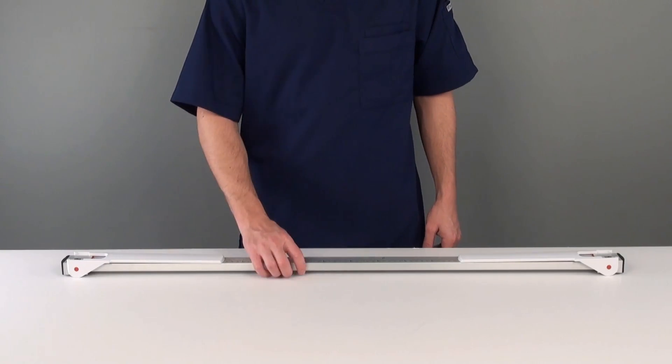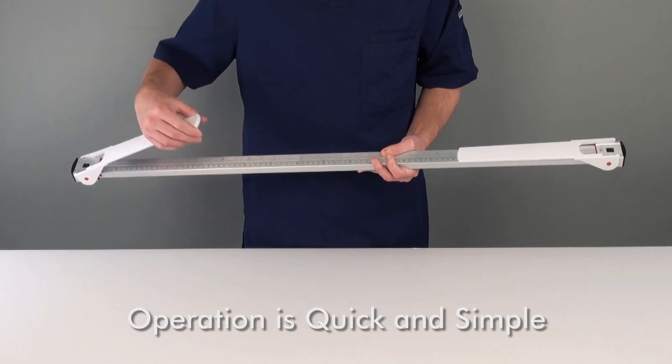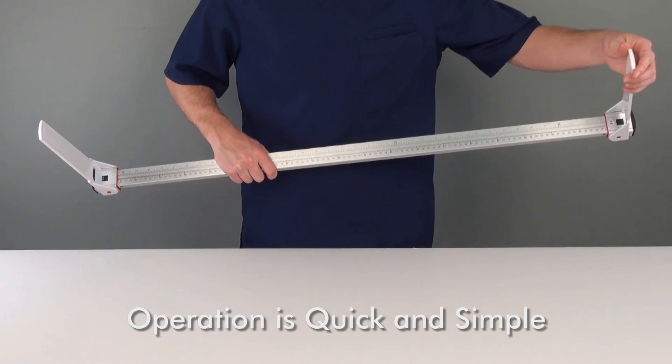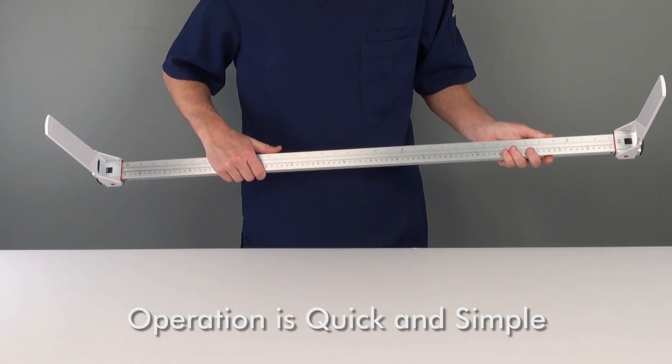Operating the MLM Infant Stadiometer is extremely quick and simple. First, place the infant on a stable, flat surface with adequate room for measurement.